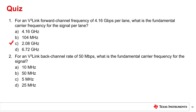Number two. For a vCubeLink back channel rate of 50 megabits per second, what is the fundamental carrier frequency for the signal? Is it A, 10 megahertz; B, 50 megahertz; C, 5 megahertz; or D, 25 megahertz? The answer is B, 50 megahertz. Remember that the vCubeLink back channel uses Manchester encoding, so the bit symbol rate in megahertz is equivalent to the bit rate.